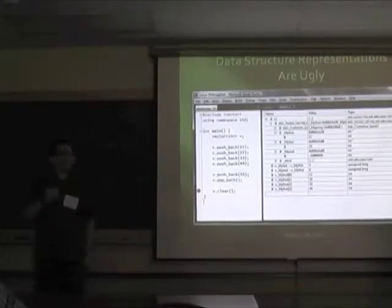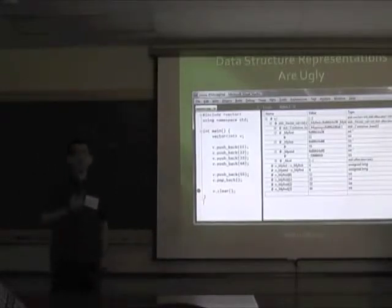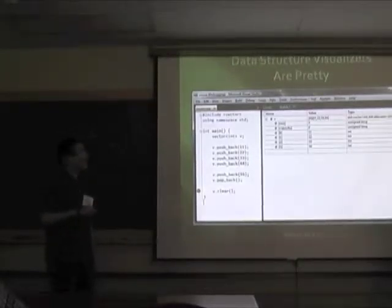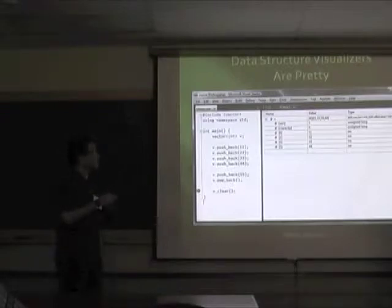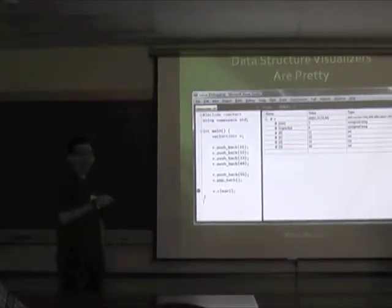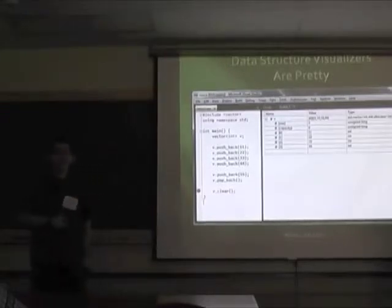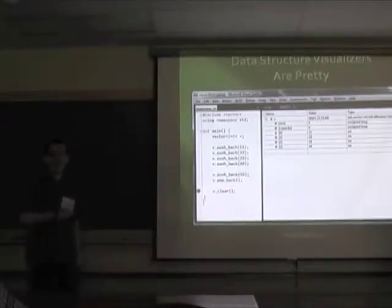I can type `v._Mylast - v._Myfirst` to get the size of 4, same for capacity. I can say `v._Myfirst[1]` to get the element 22. But this is rather inconvenient. What visualizers do — originally implemented in Visual Studio 2005 and enhanced in 2010 — is they take STL containers, iterators, and other objects and format them in a much easier to read manner. My vector v is displayed with its size of 4 elements and shows 11, 22, 33, 44 immediately, plus size and capacity when expanded.